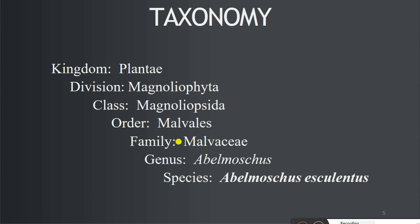Next important point is taxonomy. Kingdom: Plantae; Division: Magnoliophyta; Class: Magnoliopsida; Order: Malvales; Family: Malvaceae; Genus: Abelmoschus; Species: Abelmoschus esculentus.